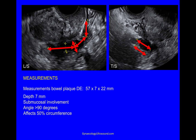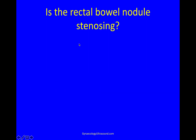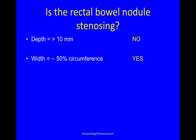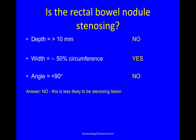There's the width and there is the diameter of the bowel. You can see that that covers the entire surface of the bowel — so half of the circumference. There is some submucosal involvement, though it's not very clear in this image. The bowel angle is more than 90 degrees. So if we think about whether this bowel nodule is stenosing or not: it's not more than 10 millimetres in depth, it does cover half of the circumference, and it doesn't retract the bowel into an angle of less than 90 degrees. So I think this is less likely to be a stenosing lesion. When the deep endometriosis is as linear as that, I tend to call it a plaque rather than a nodule because it describes it better.